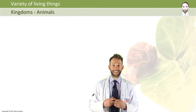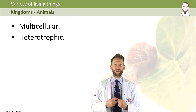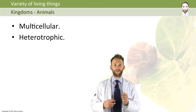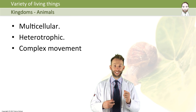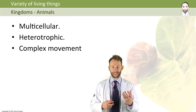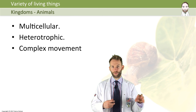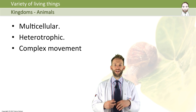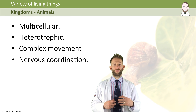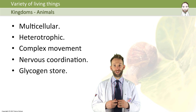Animals are also multicellular. They get their nutrition from feeding on other organisms, which we call heterotrophic. They are capable of movement from one place to another — more complex movement, usually from one location to another. They have nervous coordination. They don't have a cell wall or chloroplasts and do not photosynthesize, and they store their carbohydrate as glycogen.